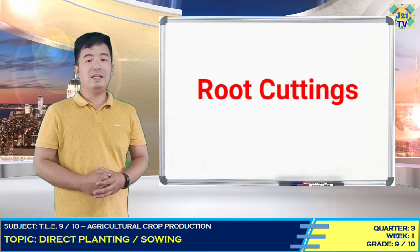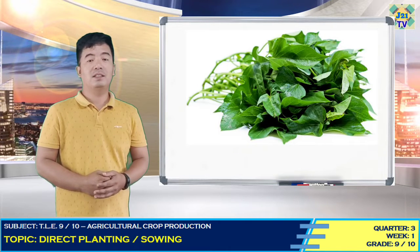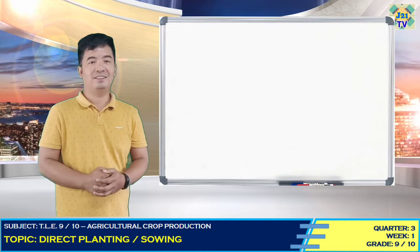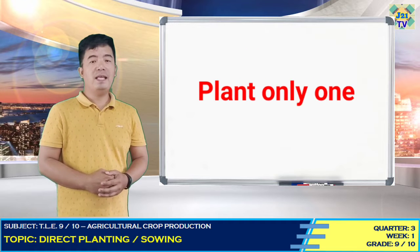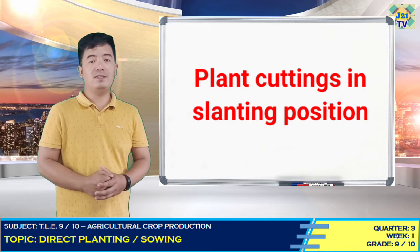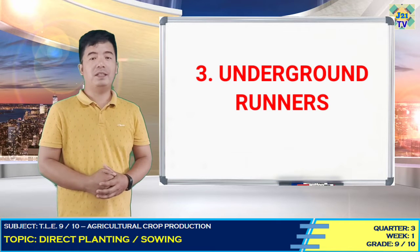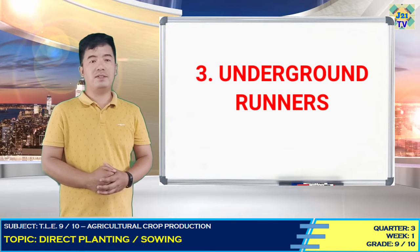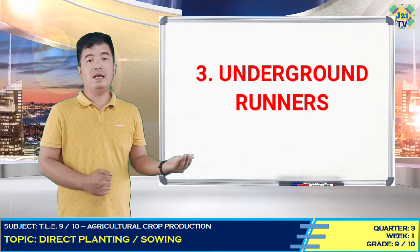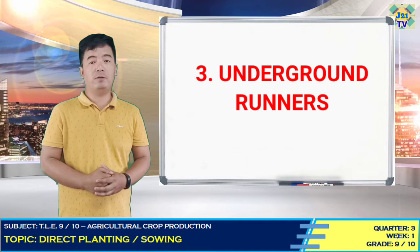Kinds of cuttings: number one, root cuttings just like the rimas; stem cuttings just like kamote; leaf cuttings just like kangkong. For planting cuttings: plant only one cutting per hole; plant cuttings in a slanting position. Number three, underground runners — the underground section of the plant is used as planting material. The runners or suckers are taken off from the parent plants and then planted in the field before they get dry.